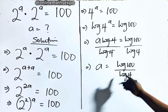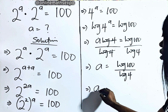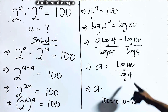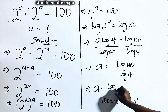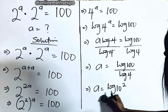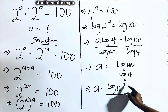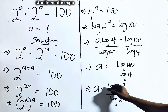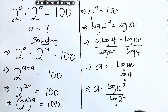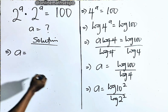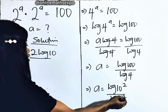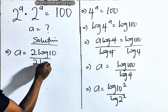Now what do you do next? This is the same as: remember that 100 is the same as 10 multiplied 2 times, which is 10 squared. So we are going to have log of 10 squared divided by log of 2 squared. The power multiplies the log, so we have 2 log 10 divided by 2 log 2.